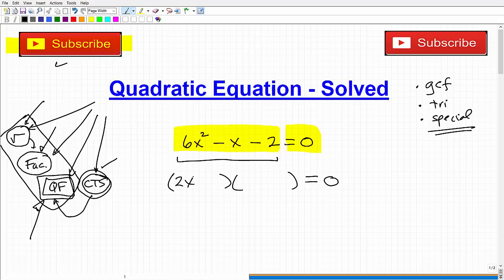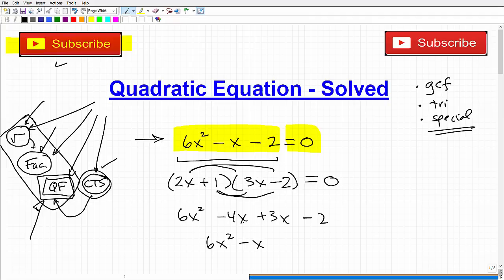But basically, this is factorable into these two binomials, 2x plus 1 and 3x minus 2. And if you weren't sure, if you're like, well, I think these are the factors, you can always multiply using the FOIL method to see if you get back to your original answer. So, let's just do that real quick. So, 2x times 3x is 6x squared, 2x times negative 2 is negative 4x, 1 times 3x is 3x, and then 1 times negative 2 is negative 2. So, when I simplify this, I get 6x squared minus x minus 1x or minus x minus 2, and that's what I have right here.